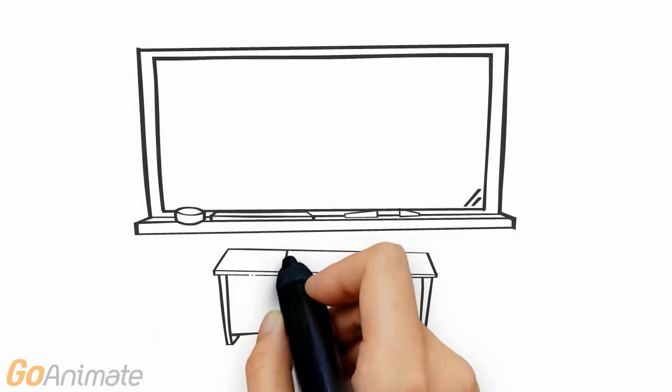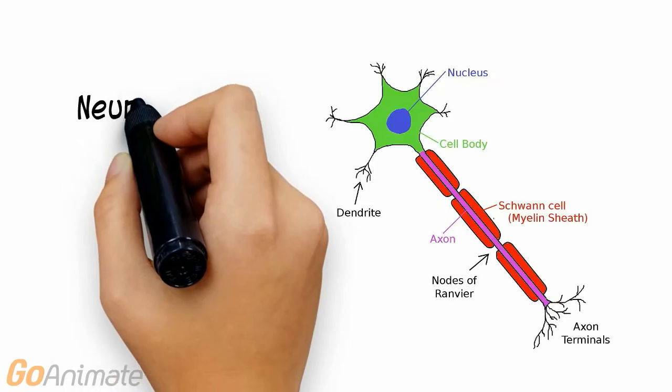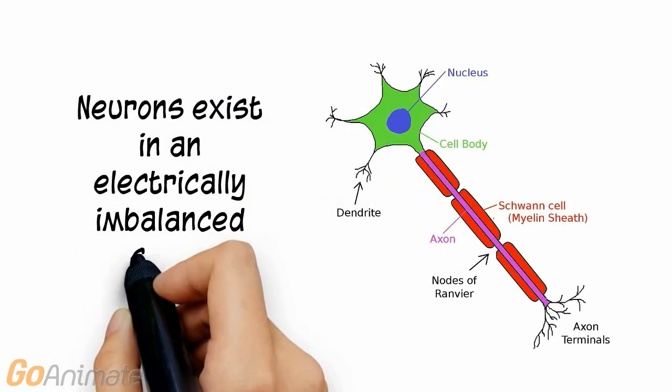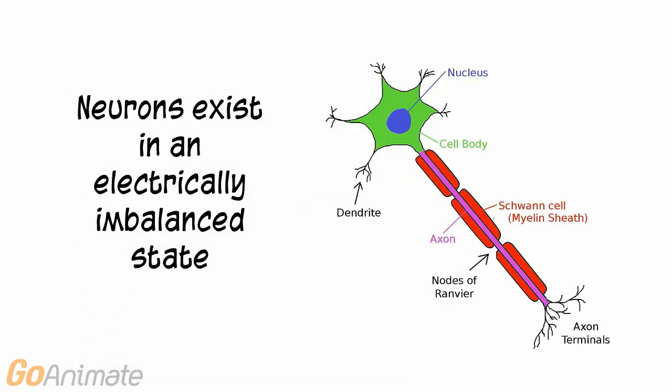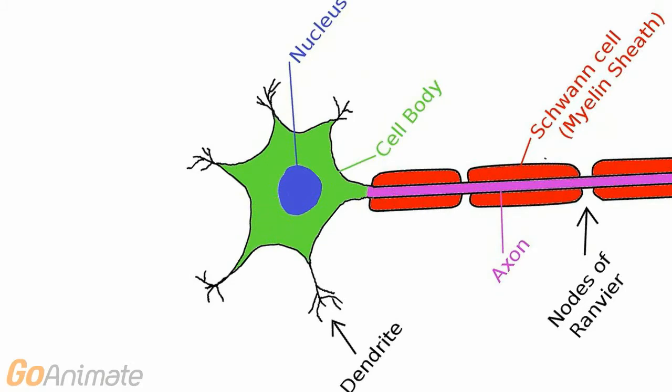Let's learn about the neuron's resting membrane potential. Neurons exist in an electrically imbalanced state. This occurs because of the number of positive and negative ions inside and outside of the cell.